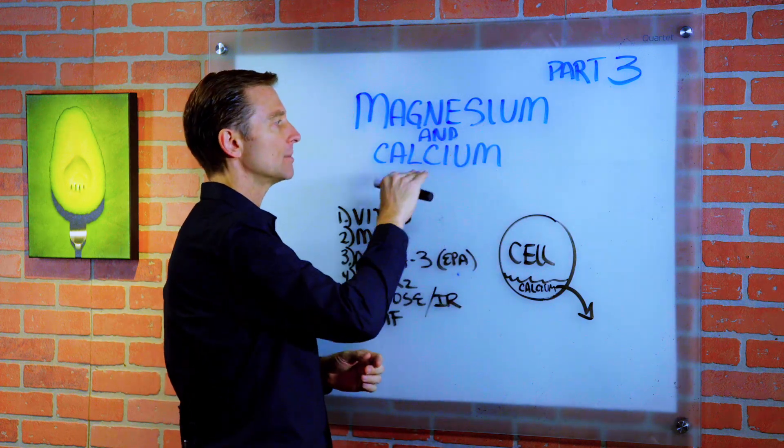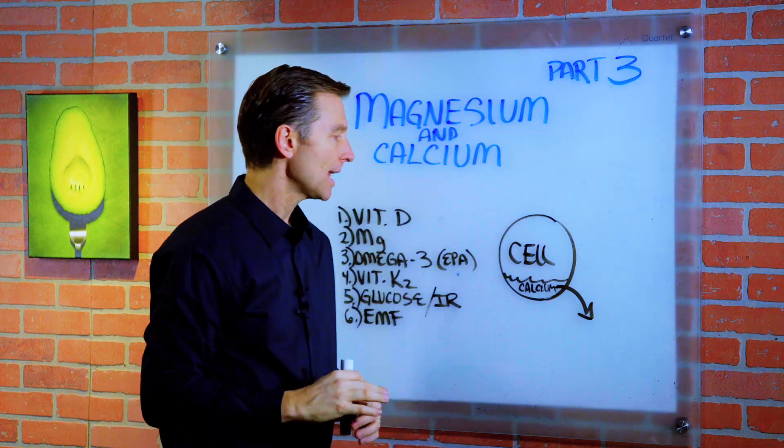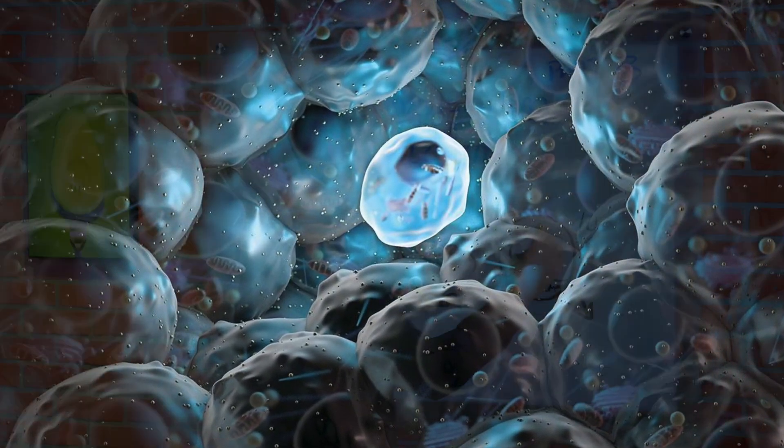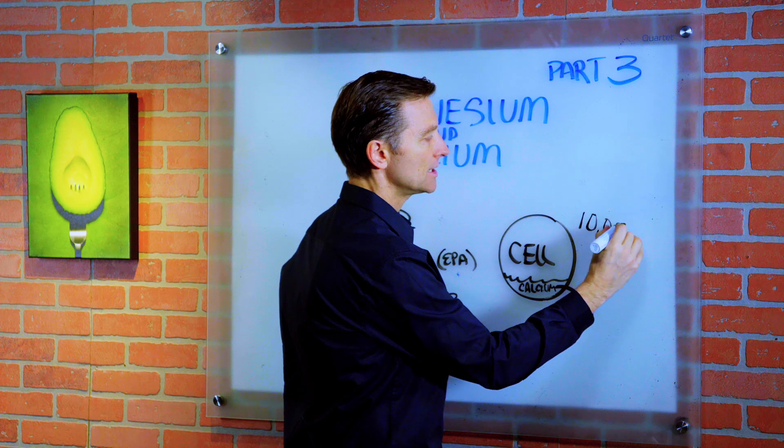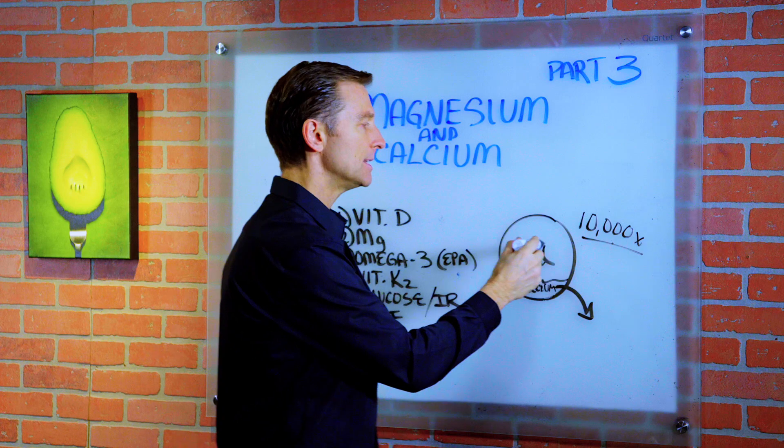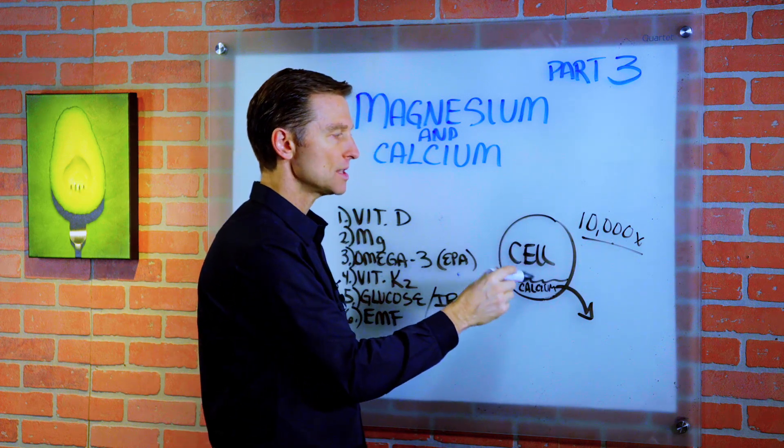Now, we talked about magnesium, we talked about calcium. Now we're going to talk about how to get rid of the excess calcium outside the cell. There is 10,000 times more concentrated calcium outside the cell than inside the cell in relationship to this mineral calcium.